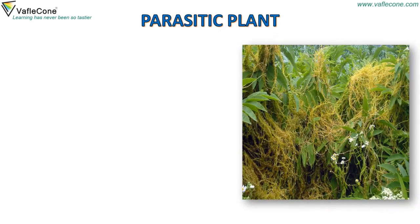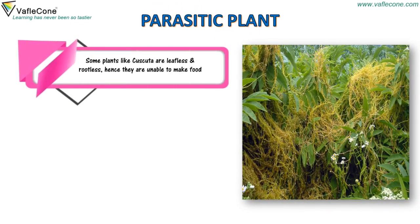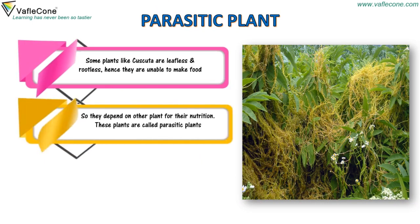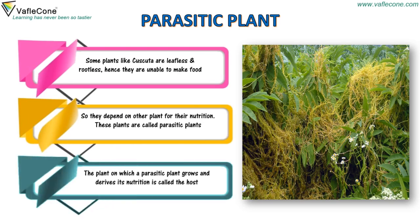Some plants, like cascuta, are leafless and rootless. Hence, they are unable to make food, so they depend on other plants for their nutrition. These plants are called parasitic plants. The plant on which a parasitic plant grows and derives its nutrition is called the host.